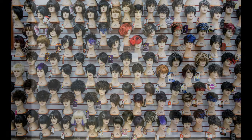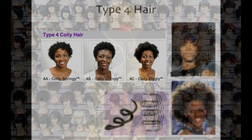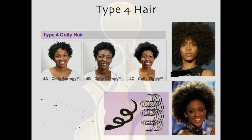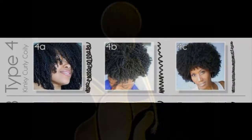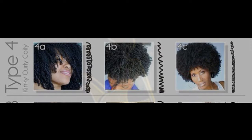Type 4 hair. Type 4 hair is very tightly curled, sometimes called kinky. This texture will not exhibit the shine or silky surface of looser curl types, but instead has a sheen and a soft, cotton-like feel.